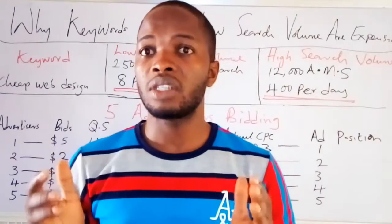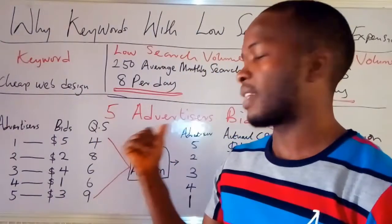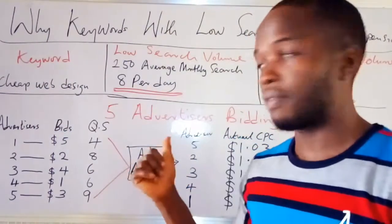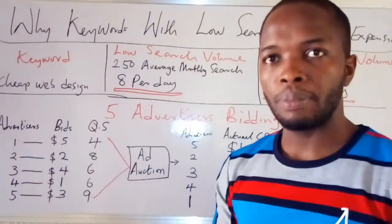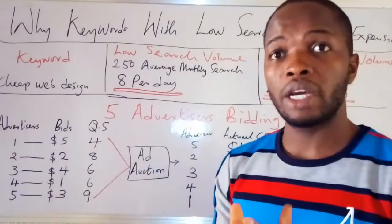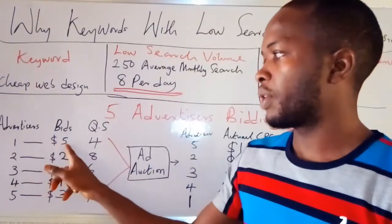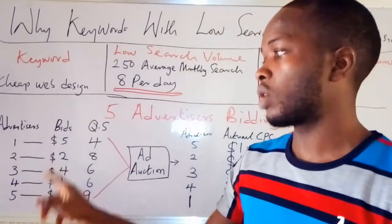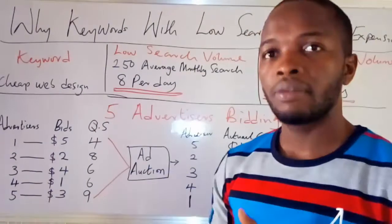I want to show why it's possible to get high cost per click for the low search volume and low cost per click for the high search volume. I'm going to explain exactly how it works using the Google AdWords ad auction. Let's say we have five advertisers bidding for this keyword 'cheap web design' in a particular location. The first advertiser bids $5, the second bids $2, the third bids $4, the fourth bids $1, and the fifth bids $3.